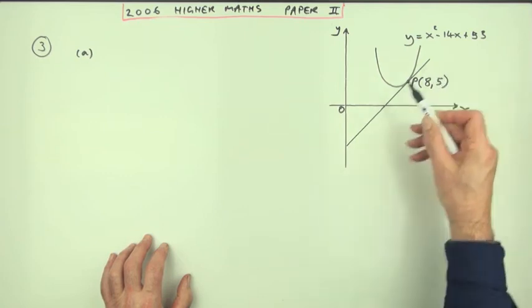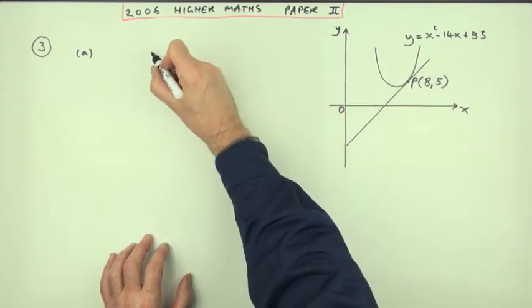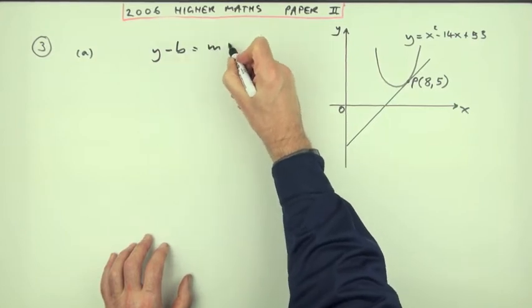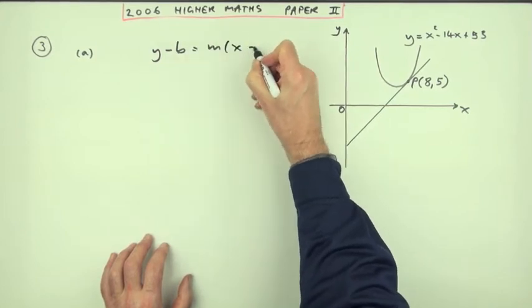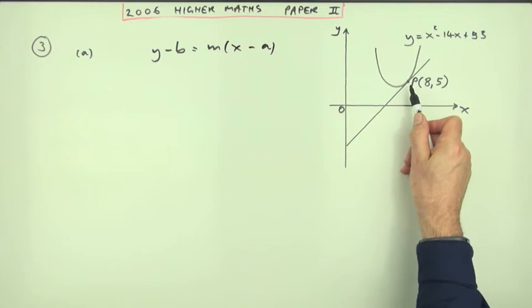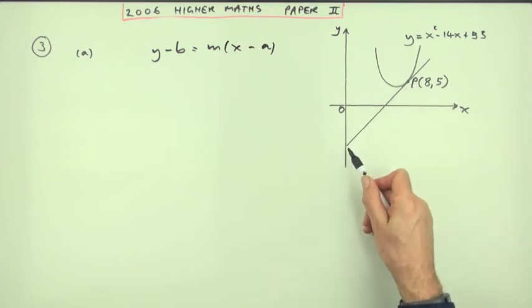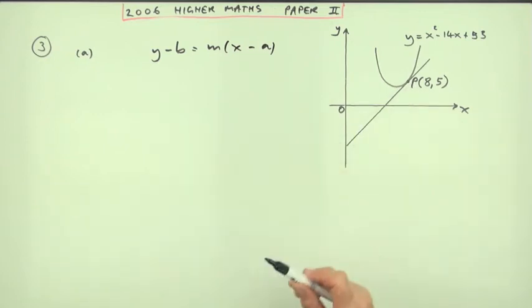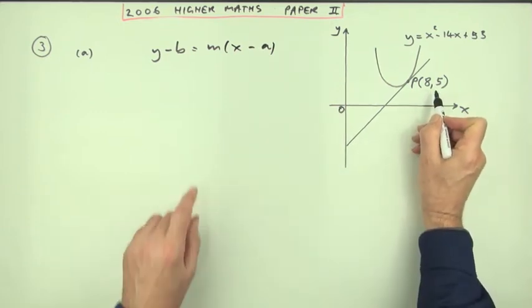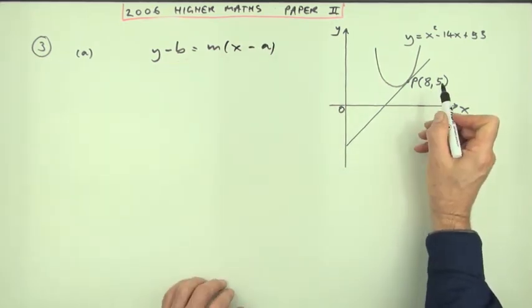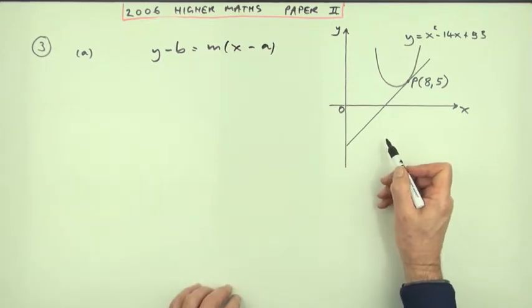You want the equation of a line, so it must look like y minus b equals m times x minus a, because I know a point on the line rather than where it cuts the y-axis. So I'm not using y equals mx plus c. That point will give me the values of a and b, and the gradient of the line...